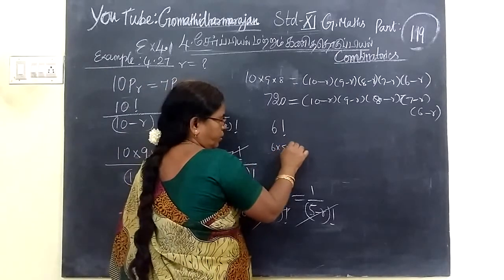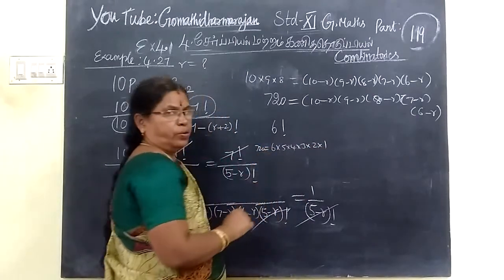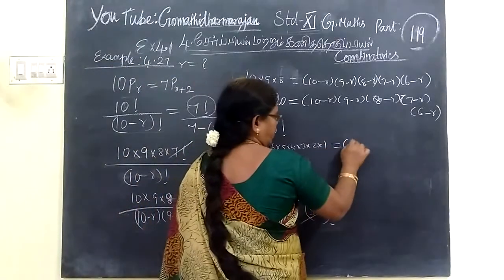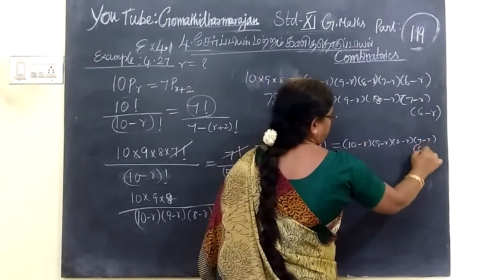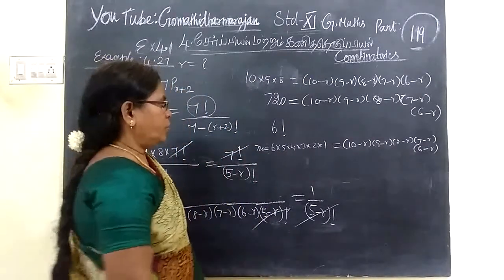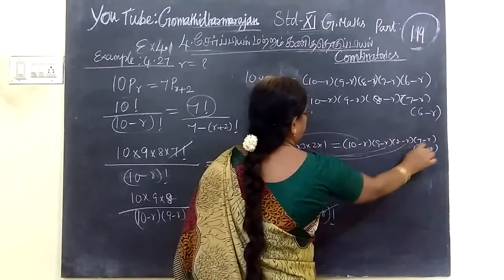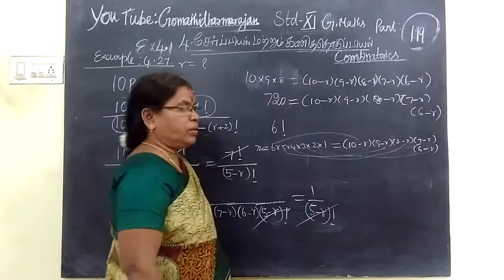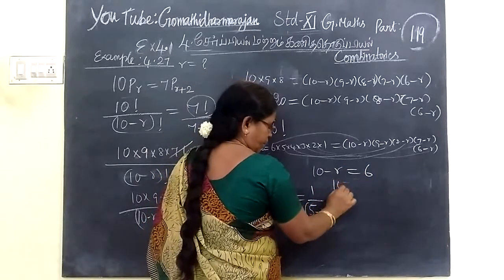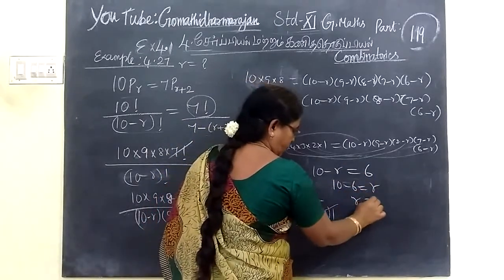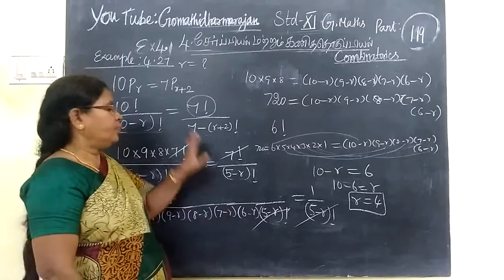Because 720 is 6 factorial. 6 into 5 into 4 into 3 into 2 into 1. So this means 10 minus R, 9 minus R, 8 minus R, 7 minus R, 6 minus R are equalized. So you equate 10 minus R equal to 6, which implies 10 minus 6 equal to R. Therefore R equal to 4. So the value of R equal to 4.